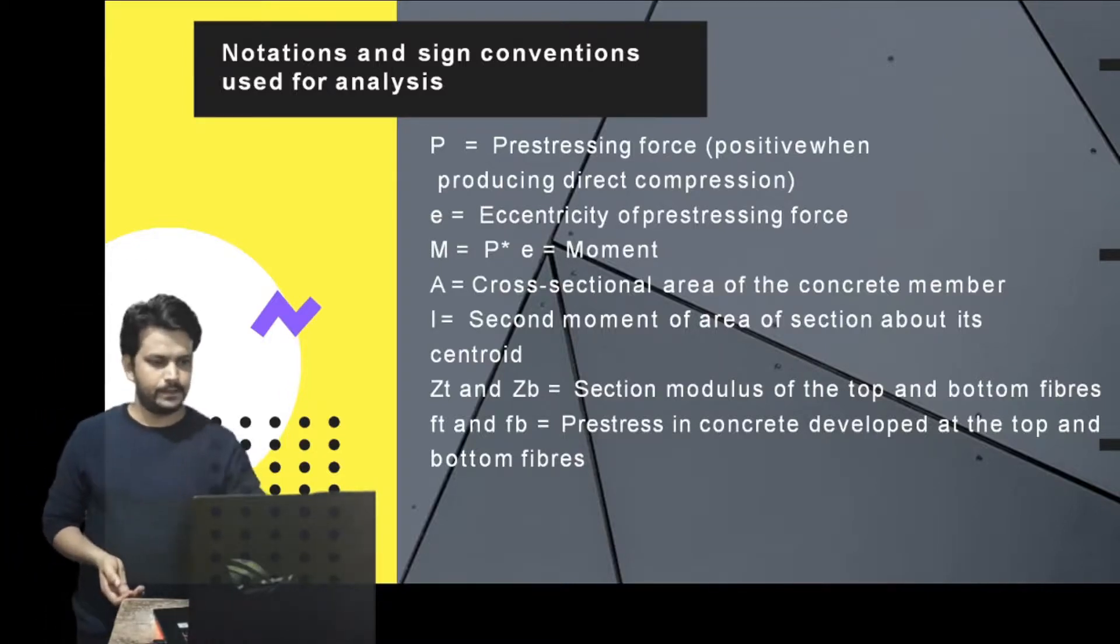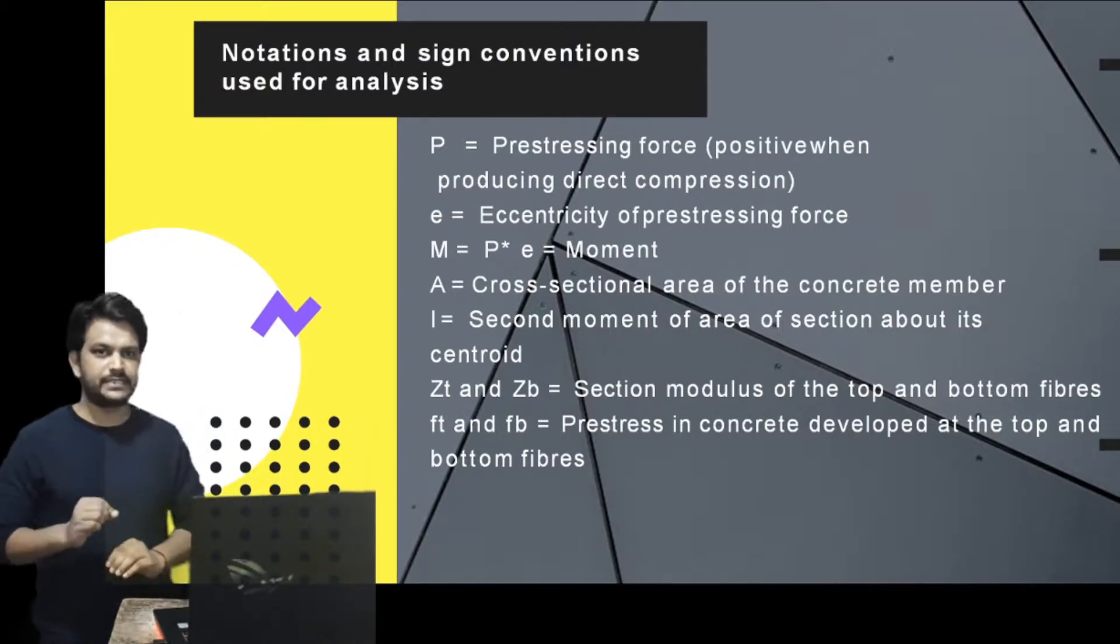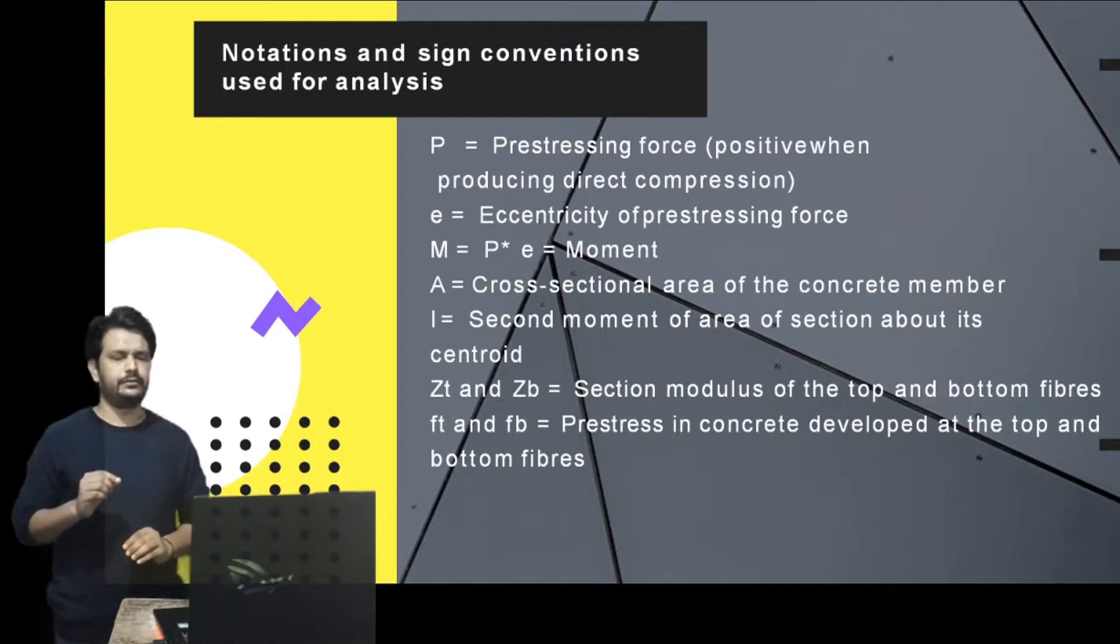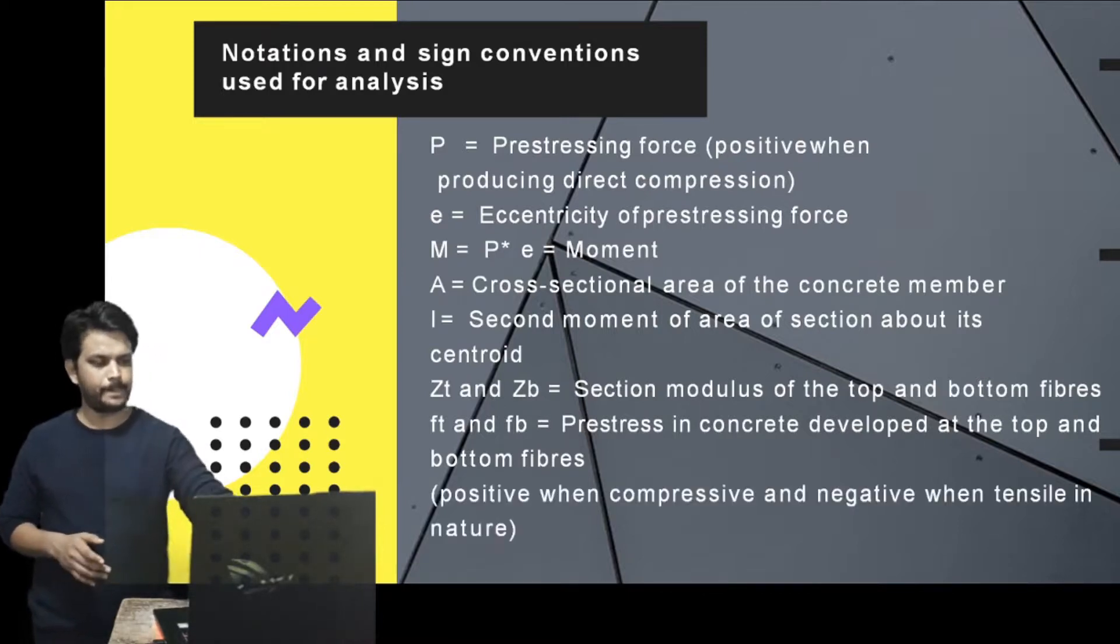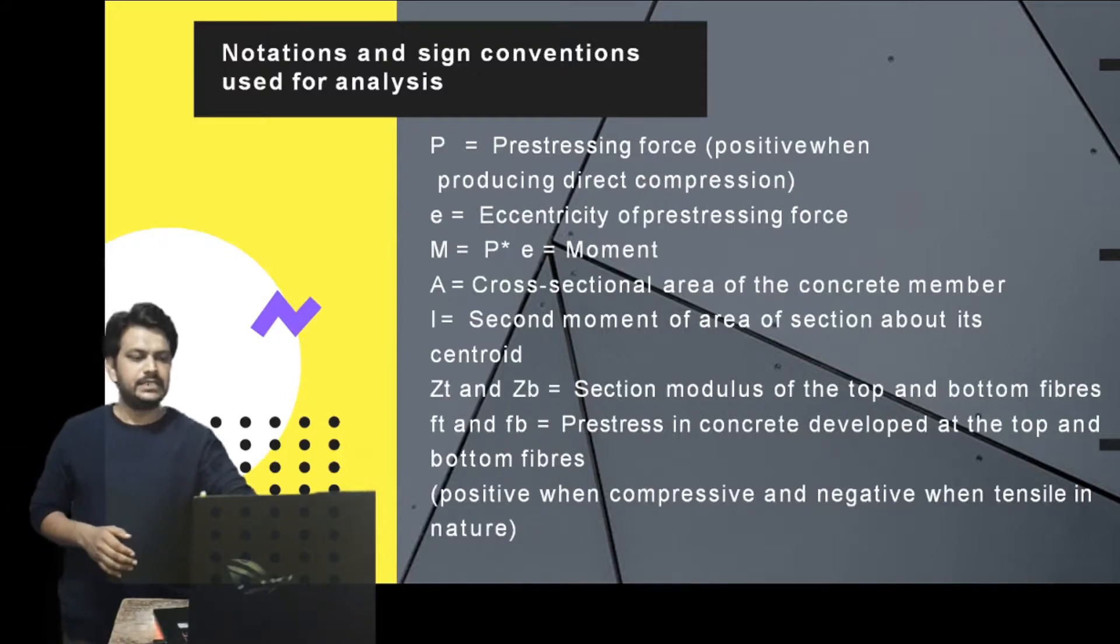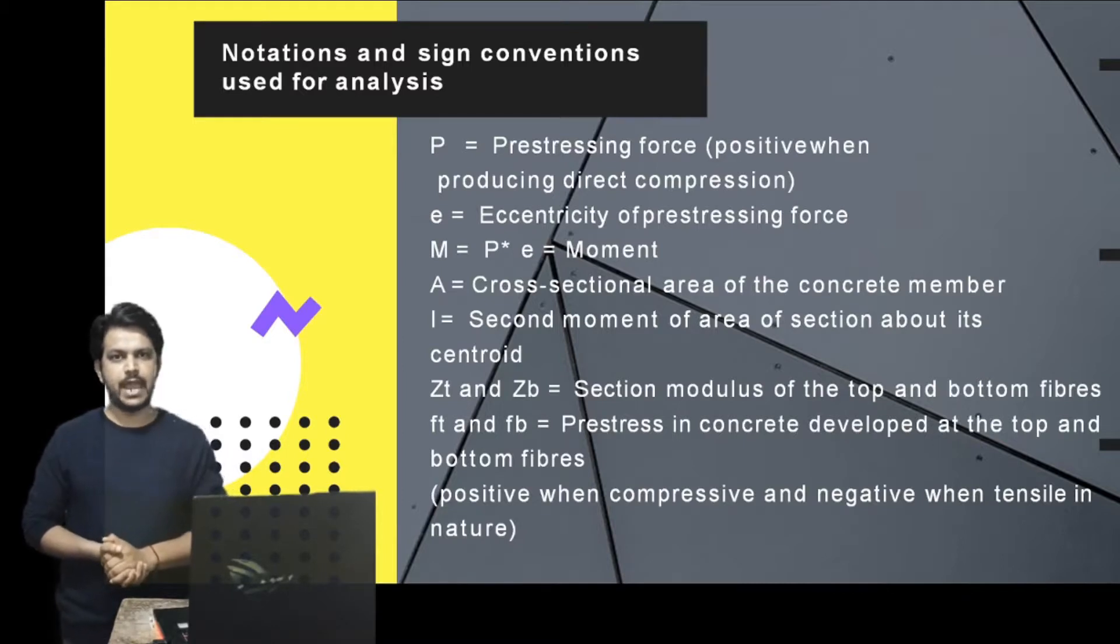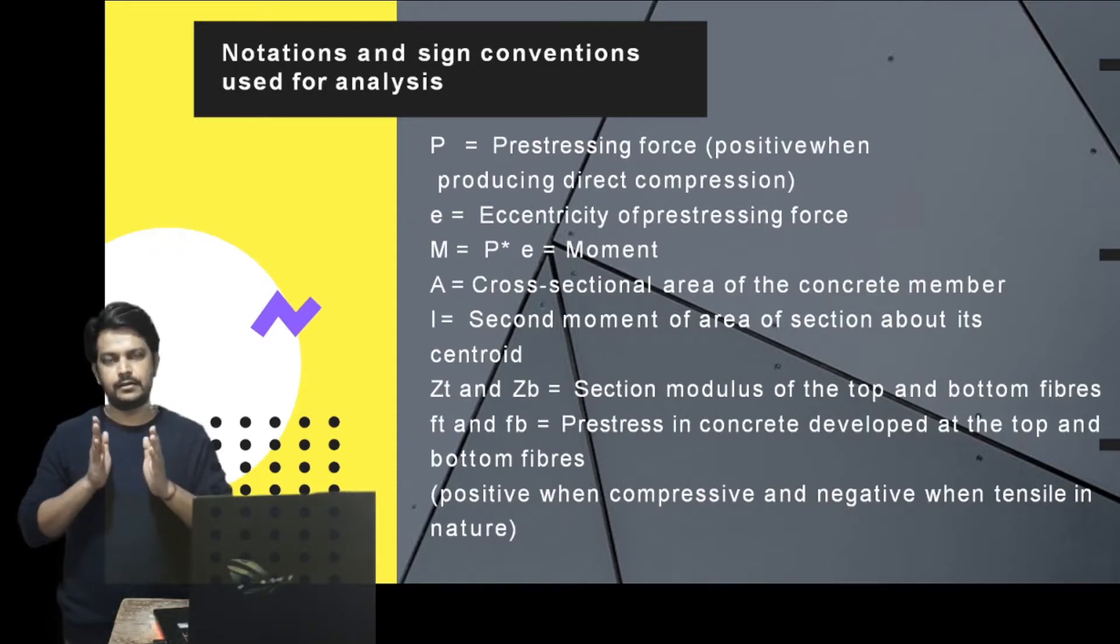FT and FB: T stands for top fiber stress and B stands for bottom fiber stress. These stresses are considered positive when compressive in nature and negative when tensile. Simply remember that throughout prestress, we consider tensile stresses as negative.